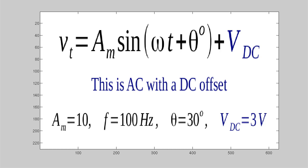So we've got a 10 volt amplitude, 100 hertz wave, 30 degrees phase shift, that's plus 30 so it's leading, and a 3 volt DC offset.